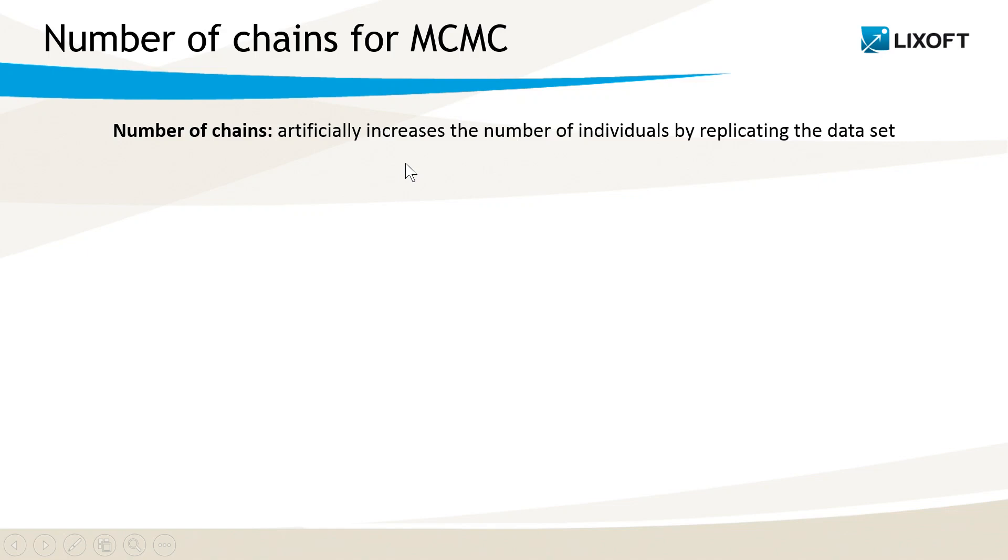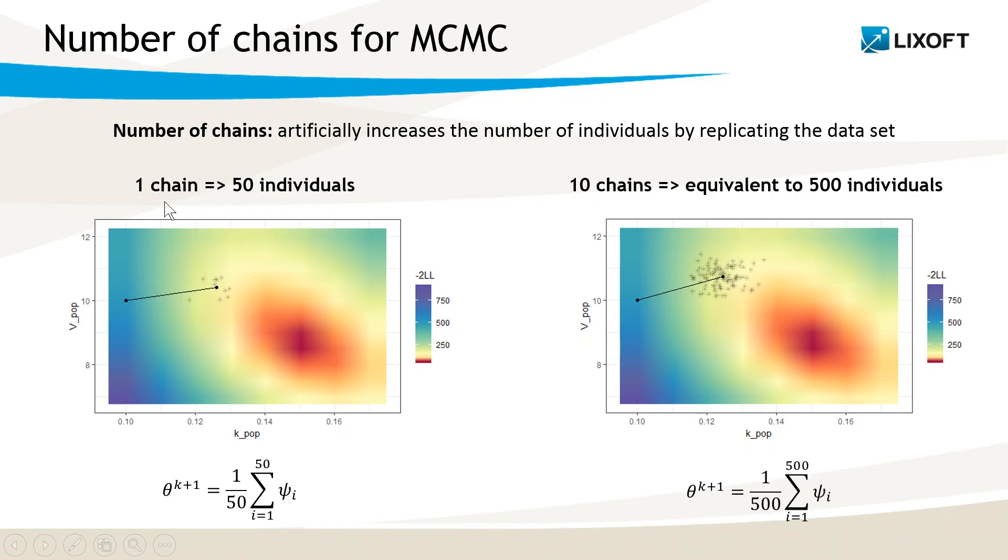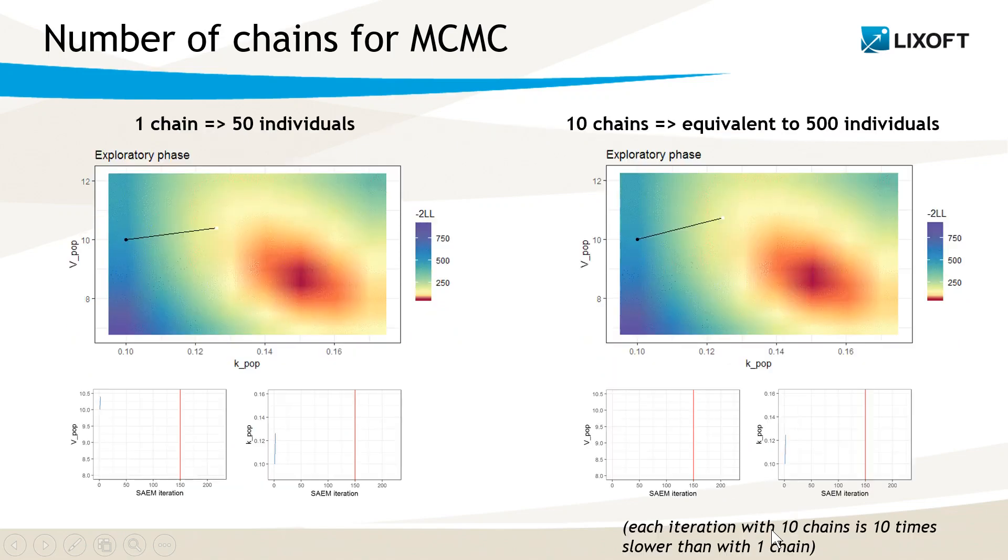Let's assume I have 50 individuals in my original dataset. If I have one chain, I will sample 50 individual parameter values and average over those 50 values to get the new population parameters. If instead I set 10 chains, then I have the equivalent of 500 individuals. So my average is over more values and is then more stable.